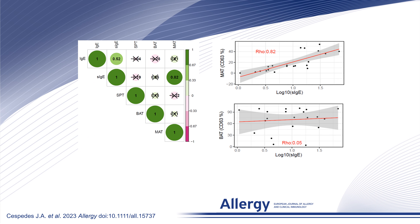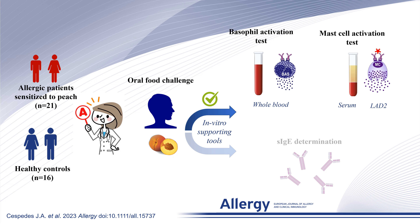As expected, MAT is more related to specific IgE levels than BAT, because MAT uses RBL-2 cells which are passively sensitized with patients' sera, whereas BAT is based on specific IgE already bound to basophils' FC-epsilon-R1 receptors. We demonstrate for the first time the utility of MAT in diagnosis of non-specific lipid transfer protein allergy with higher specificity compared to specific IgE determination.